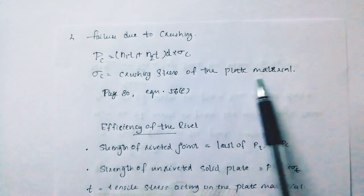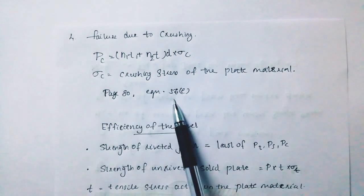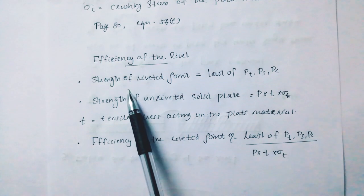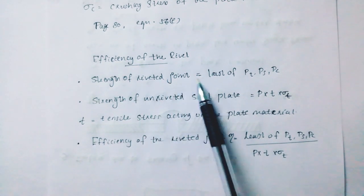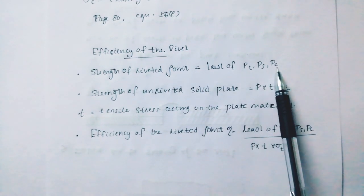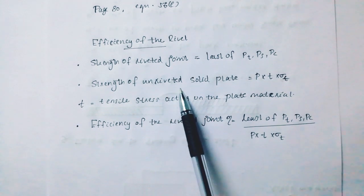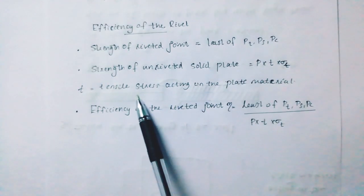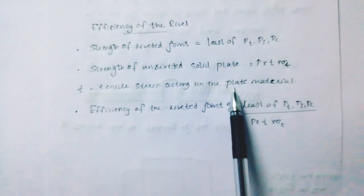Page 80, equation 5.6E. Efficiency of the rivet: strength of riveted joint is the least of PT, PC, and PS. Strength of unriveted solid plate equals P times T times sigma T, where sigma T is the tensile stress acting on the plate material.